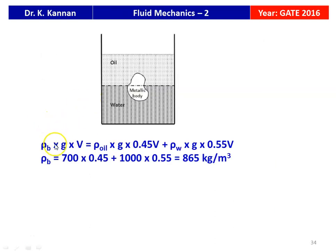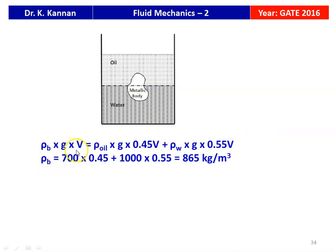Equating the force balance: rho_B times g times V equals rho_oil times g times 0.45V plus rho_W times g times 0.55V. Here g and V cancel, so rho_B equals 700 times 0.45 plus 1000 times 0.55, which equals 865 kg/m³. That is the answer to the problem.